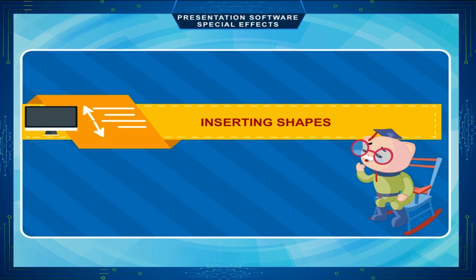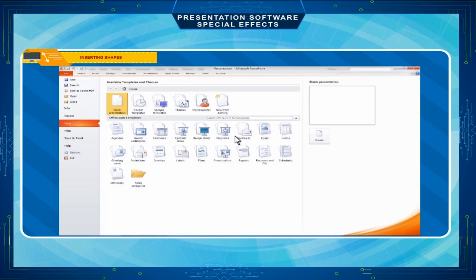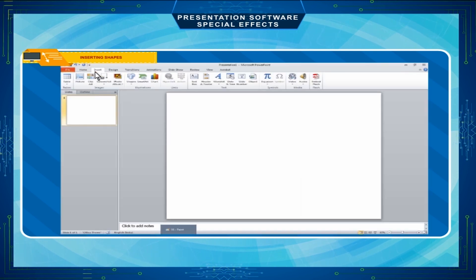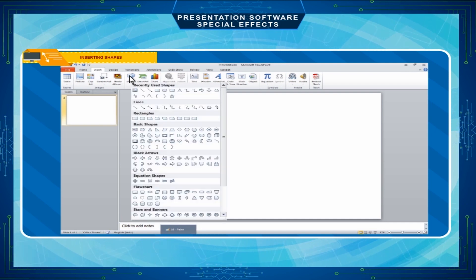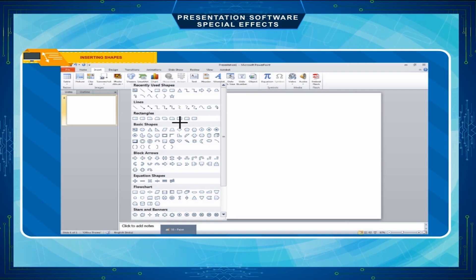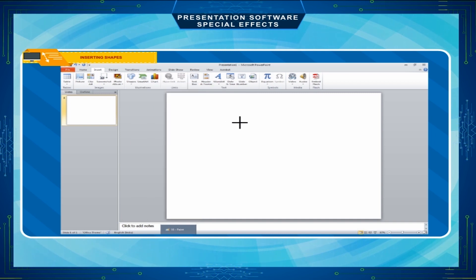Inserting Shapes. Shapes allow us to draw different geometrical shapes. Go to the Insert tab and click on the Shapes button in the Illustrations group. A pop-up menu will display different shapes like Lines, Rectangles, Flowchart, Callouts, etc. Choose a shape and click on it. The pointer changes to a plus sign. Place the pointer on the slide and drag it to the desired size.